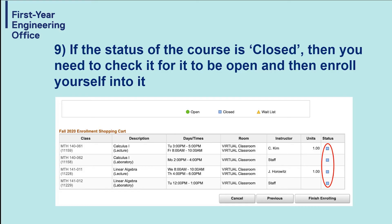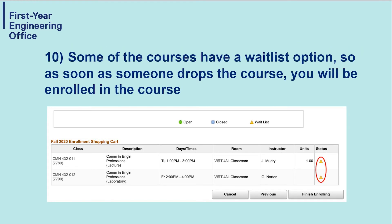If the status of the course is closed, then you need to check for it to be open and then enroll yourself in it. Some of the courses have a waitlist option, so as soon as someone drops their course, you'll be enrolled in the course.